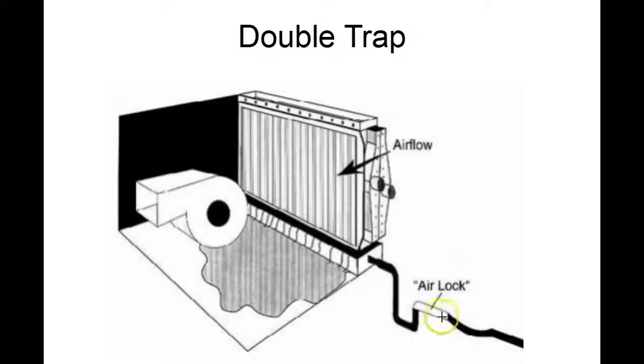This bow could be over the course of 15, 20 feet and not very noticeable at all, just a little tiny bow. That creates a double trap condition. What happens is we get an airlock in here and once you get an airlock between these two columns of water, it will no longer allow this system to drain. This is just the same as a too tall trap. It will back up into the drain pan and then flood into the air handling unit.